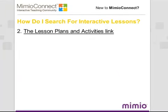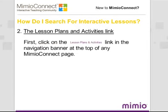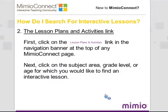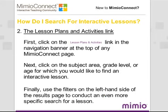Another way to easily search for content on Mimeo Connect is to use the Lesson Plans and Activities link, located in the navigation banner at the top of any Mimeo Connect page. Once you've clicked on the link, click on the subject area, grade level, or age for which you'd like to find an interactive lesson. Finally, use the filters on the left hand side of the results page to conduct an even more specific search for a lesson.